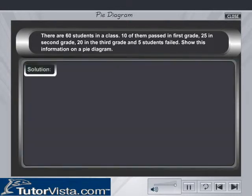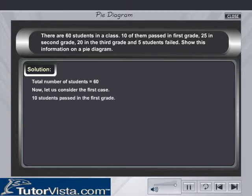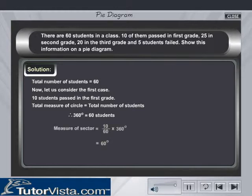Solution. Total number of students is equal to 60. Now, let us consider the first case. 10 students passed in first grade. Total measure of circle is equal to total number of students. Therefore, 360 degrees is equal to 60. Measure of sector is equal to 10 by 60 into 360 degrees, equal to 60 degrees.